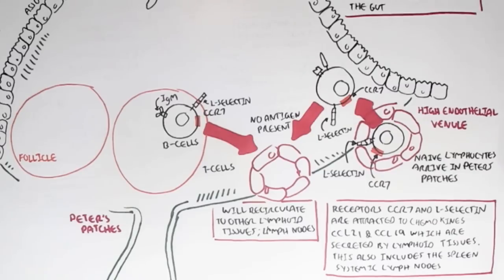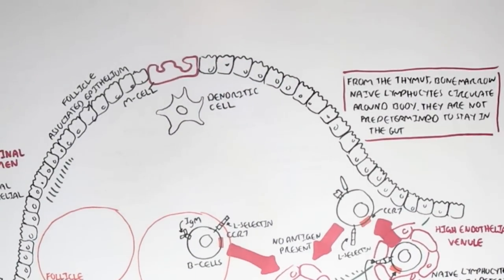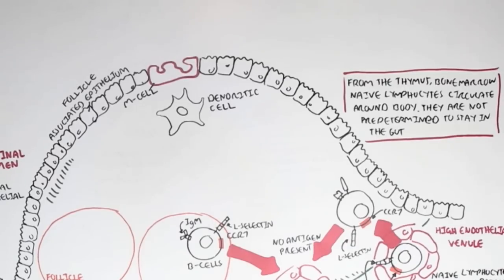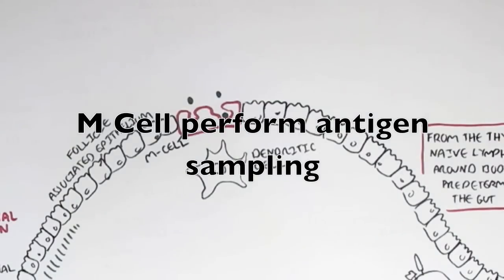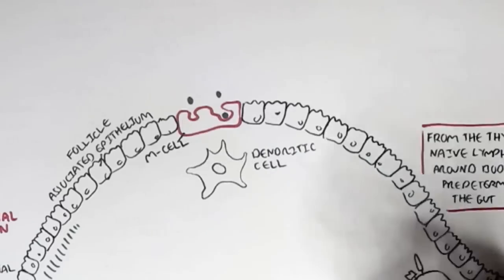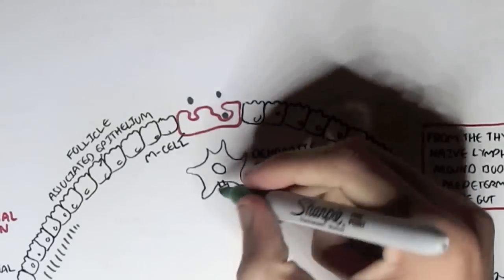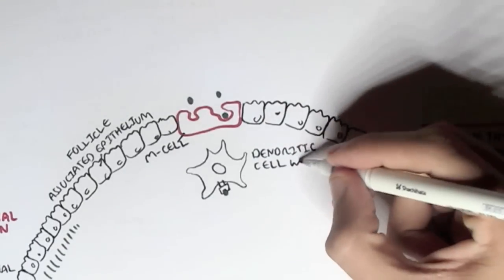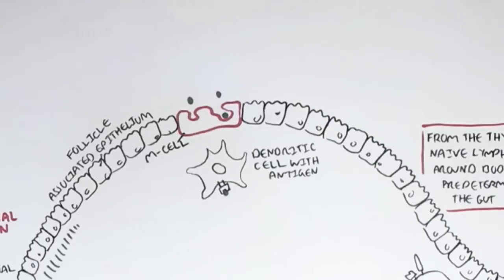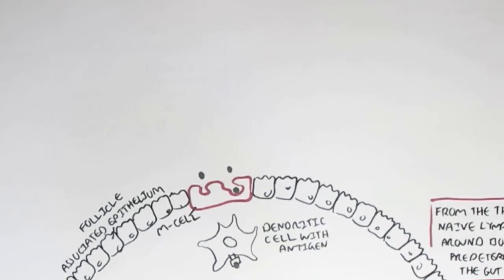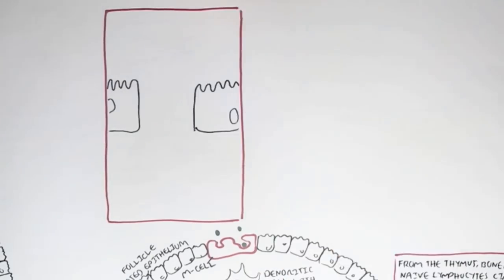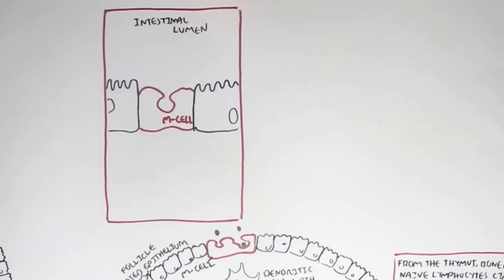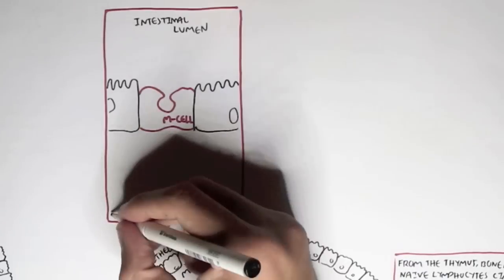So what happens if an antigen is present? What happens to these lymphocytes, and how does an antigen get presented to them? The M cells play a critical role here. The M cells take up the antigen — the process known as antigen sampling — and transport it across to dendritic cells, where the dendritic cells can then present it to the lymphocytes. If an antigen and pathogen is present, the follicle-associated epithelial cells will begin secreting chemokines CCL20 and CCL19.